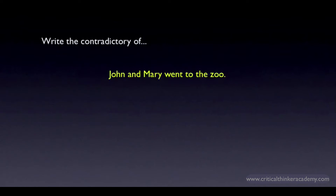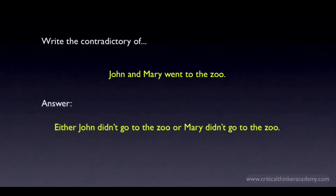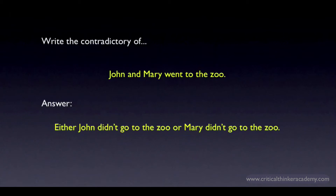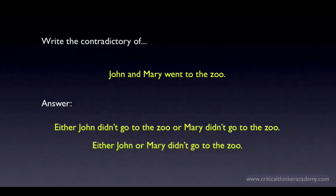What's the contradictory of 'John and Mary went to the zoo'? Answer: Either John didn't go to the zoo, or Mary didn't go to the zoo. You need to recognize the individual conjuncts, negate them, and put an or in between. Note that the 'either' is just a stylistic choice — either A or B is equivalent to A or B. You can also write the answer as: Either John or Mary didn't go to the zoo.